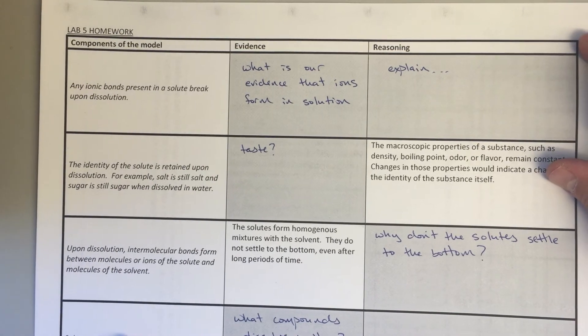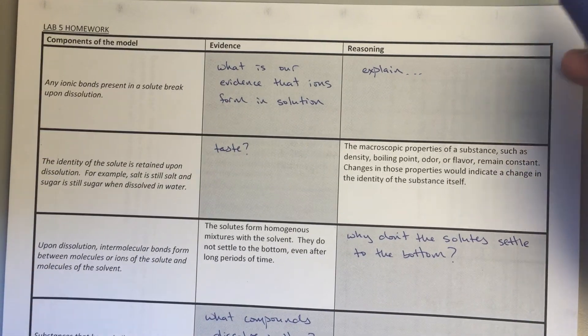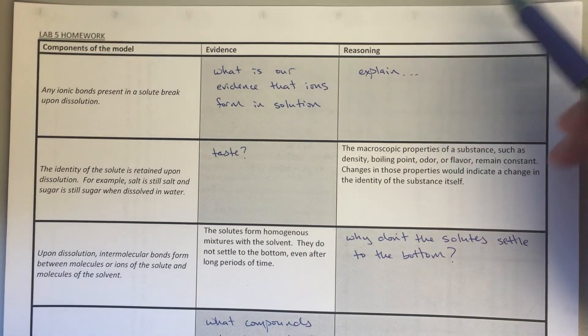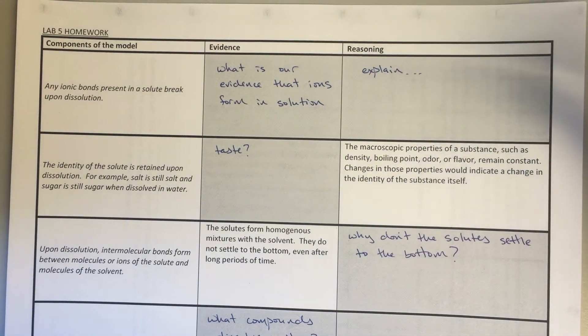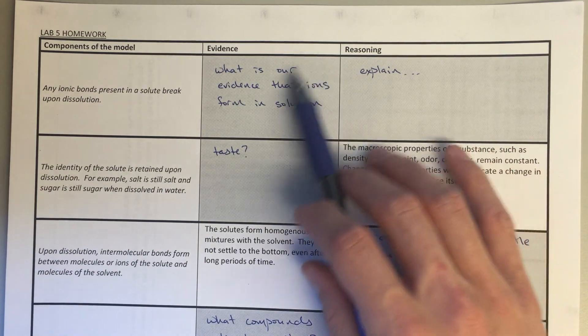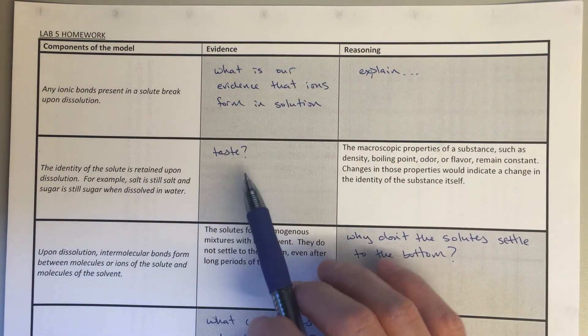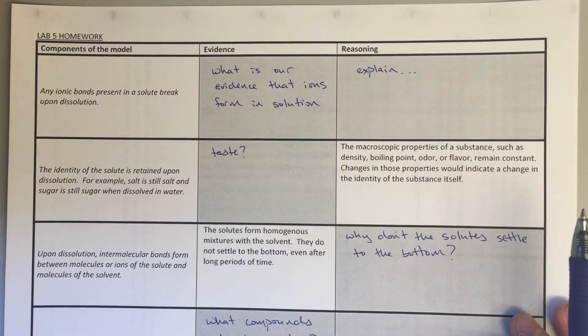For the next section, this page is all the CER stuff. The first question is, what's the evidence that ionic bonds present in a solute break upon dissolution? So again, what is our evidence that ions form and solution conducts electricity? And then the reasoning here—explain what's going on, why this evidence suggests this claim. For the next one, I'd really encourage you to think about taste, right? So taste, I think, is going to be the key for the second box.